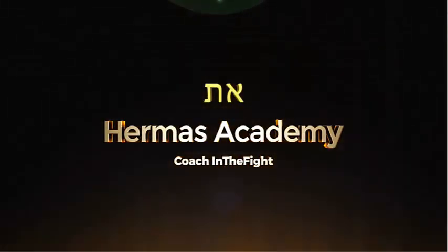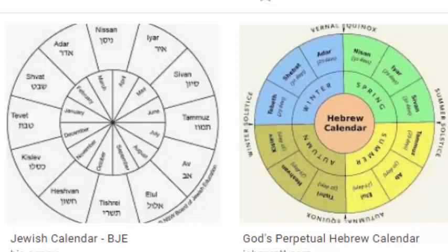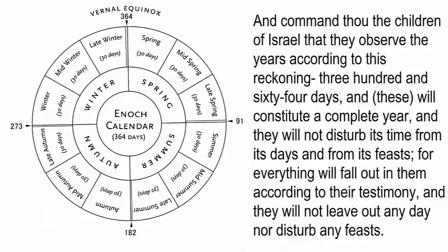Before we get into how the Enoch calendar works, I want to ask you a few questions. What do you think our ancient ancestors did before they had clocks, stellarium, or calendars printed out hanging on the wall? How did they tell time? How did they know what day it was, what month it was, or what season they were in?